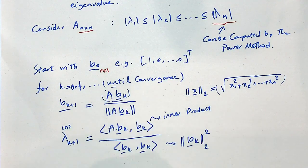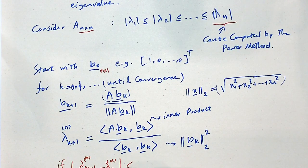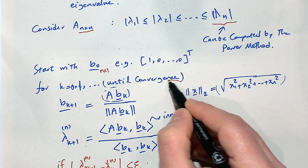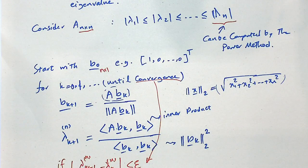We repeat the iteration until |lambda_n^{k+1} - lambda_n^k| is less than some threshold epsilon, then we break the loop. This is the convergence criterion: when the difference between eigenvalue estimates in two successive iterations falls below a given limit, we stop. After convergence, we have a good estimate of the largest-magnitude eigenvalue and its corresponding eigenvector b_{k+1}.